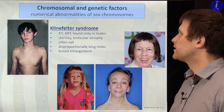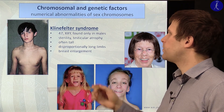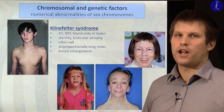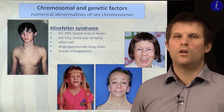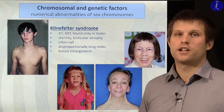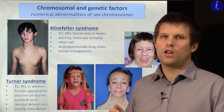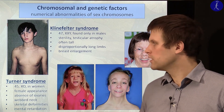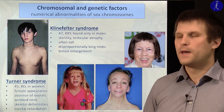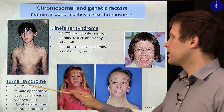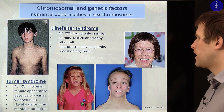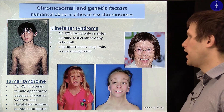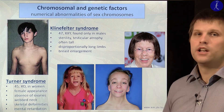Klinefelter syndrome involves an extra Y chromosome and is found only in males. It is associated with sterility, testicular atrophy, tall stature with long limbs, and breast enlargement. Turner syndrome occurs when the X chromosome is missing — usually one missing chromosome results in death, but missing the X chromosome can be survived. These individuals are officially female but the second X chromosome is missing. They have female appearance but absence of ovaries, a webbed neck, and are associated with mental retardation and skeletal deformities.